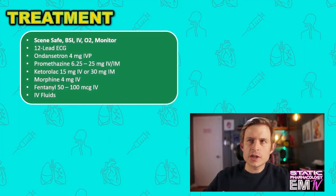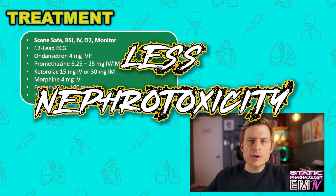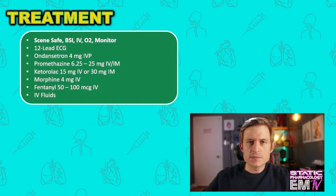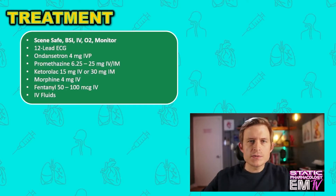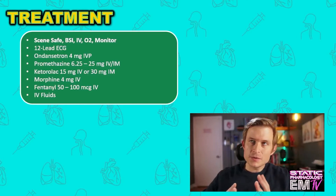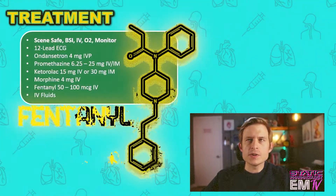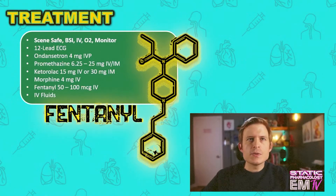The dose for Ketorolac has changed over the last couple of years. We found that 15 mg IV is just as good as 30 mg IV, however it has less effect on the kidneys, so 15 mg IV is a great starting dose. If you don't have IV access, you can also give this intramuscularly at 30 mg. For further analgesic control — and Ketorolac will make this patient feel better — if you feel like they need a little bit more, you can go into your opioids. Morphine is a safe choice at 4 mg IV push, or if you don't carry that, fentanyl is a great alternative at 50–100 mcg.